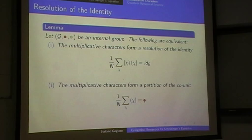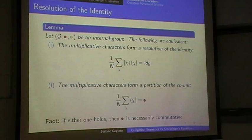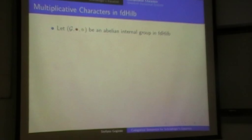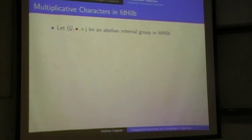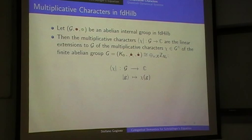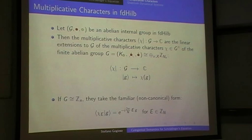This only holds when the red structure is commutative, so it doesn't really cover the non-abelian case. But we'll see in a second that that can be appropriately generalized. Multiplicative characters are called like that because in finite-dimensional Hilbert space they are exactly the linear extensions of the usual multiplicative characters of the group. They take the usual form of powers of a root of unity when the group is cyclic, so the name is appropriate.